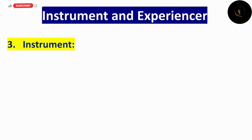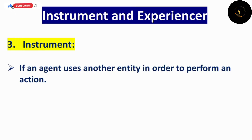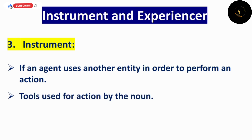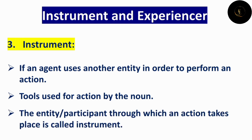اب next roles ہیں instrument اور experiencer۔ سب سے پہلے instrument کو دیکھتے ہیں۔ اگر کوئی agent action perform کرتا ہے تو وہ action perform کرنے کے لیے جو entity use کرے گا، اس کو instrument کہتے ہیں۔ یعنی جو بھی tools یا means use کیے جائیں for action by the noun phrase — وہ tool ہمارے پاس instrument کہلائے گا۔ Simply: کوئی بھی entity جس کے through action perform کیا جائے، اس کو ہم instrument کہیں گے۔